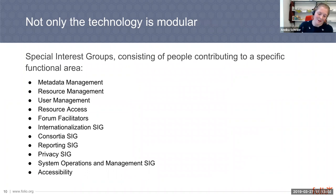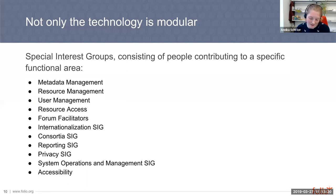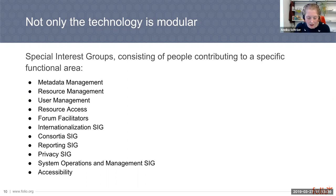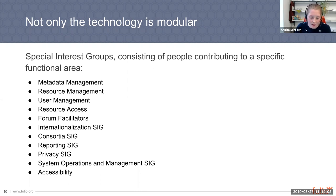Not only the technology is modular, but also the functional expertise is organized in separate groups called Special Interest Groups, or SIGs. They are always consisting of people who are experts in a specific field and want to contribute to Folio in that area — for example, metadata management, user management, resource access, or reporting. These SIGs usually meet once a week in a video conference, talking about requirements in depth, data modeling, and the current development process. They are moderated by convenors and product owners who have a very important role in the development process, defining with the help of the SIG and UX designers the requirements, conceptual design of an app, and the actual developer tasks written down in the ticket system.